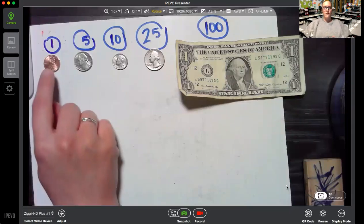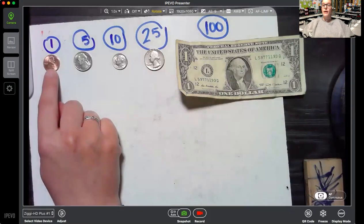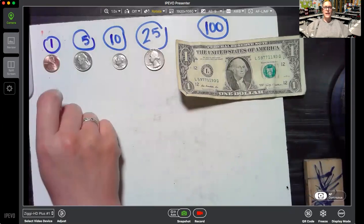So first off, we have this coin. It's called a penny. In my class we sing this: Penny, penny, easily spent, copper, brown, and worth one cent.